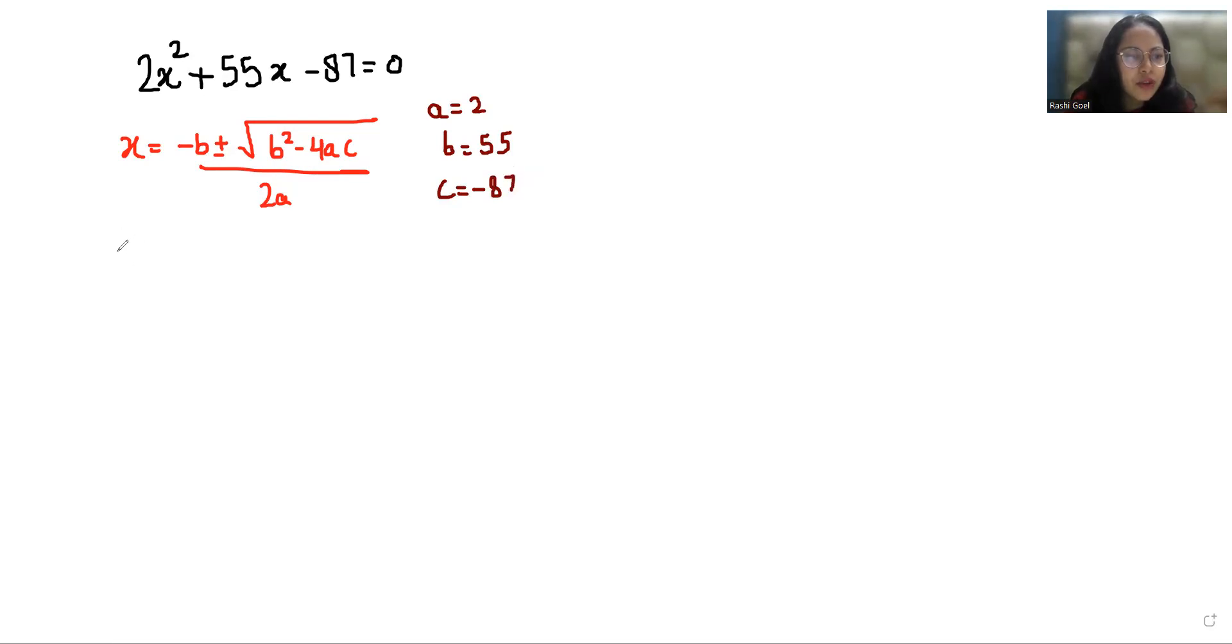So let's put all the values. x equals negative 55 plus or minus under root 55 squared minus 4 times 2 times negative 87, all by 2 times 2.